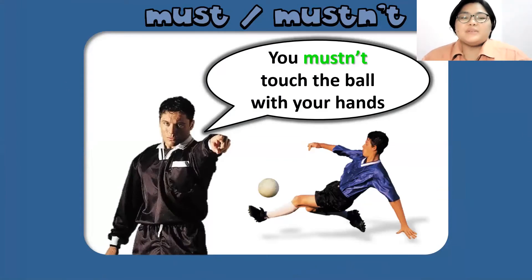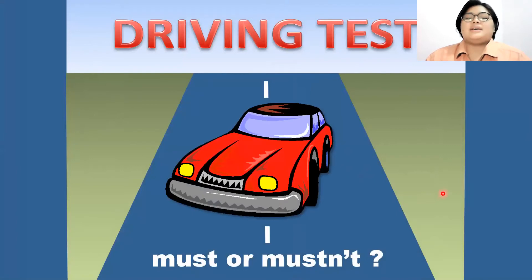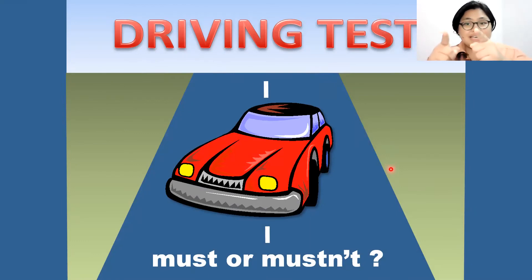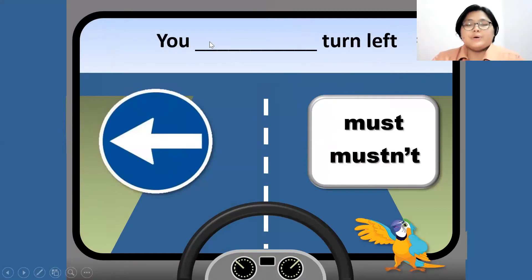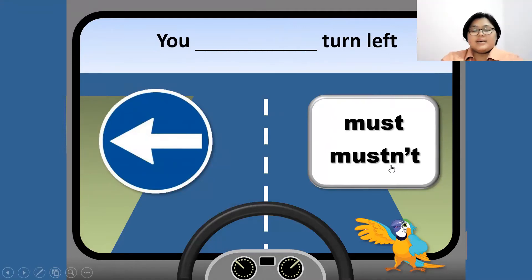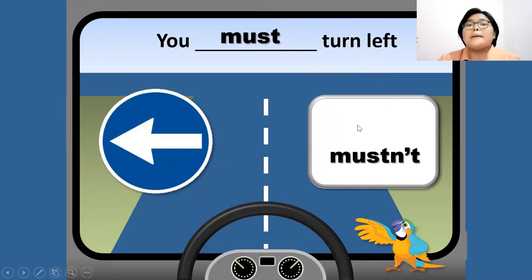Let's have a quick activity using must or mustn't — we call it a driving test. Are you ready? We have: 'You blank turn left.' Look at the symbol or the sign. What do you think the answer — must or mustn't? The answer is must. You must turn left.